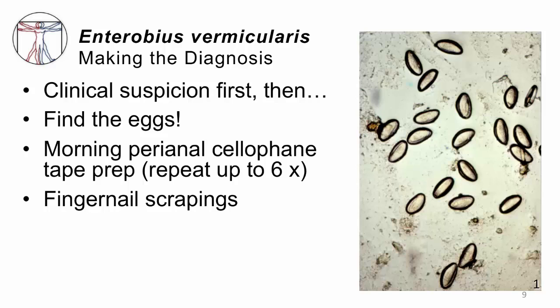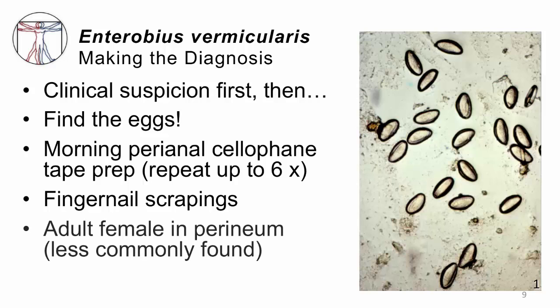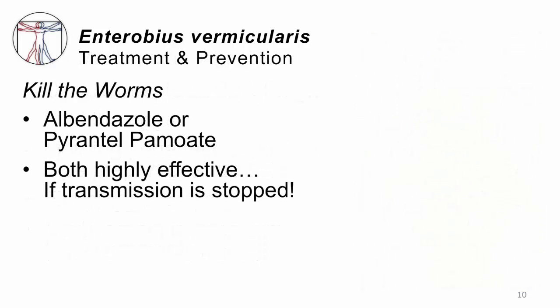The eggs are not passed consistently, so in theory if you fail to make the diagnosis the first time, you may have to repeat this procedure up to six times — which is extremely unpopular for both doctor and patient. Sometimes you end up treating empirically on your best hunch. Also, parents will sometimes go in at night, look with a flashlight at their child, and see the adult worms squirming out of the perianal area. That's unusual, but if parents report seeing this, they're probably to be trusted.